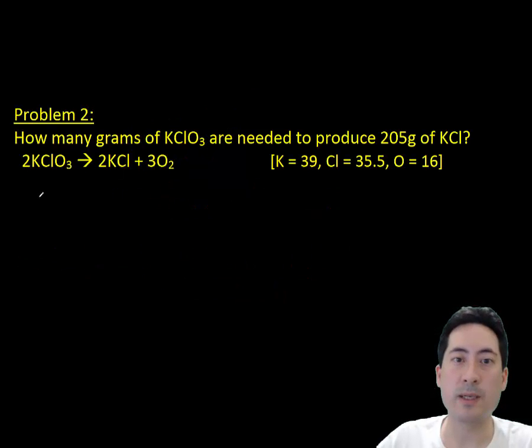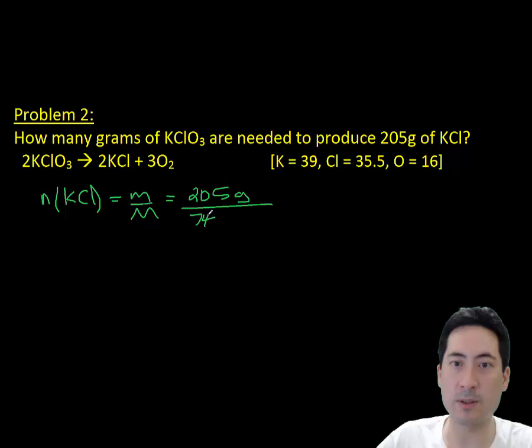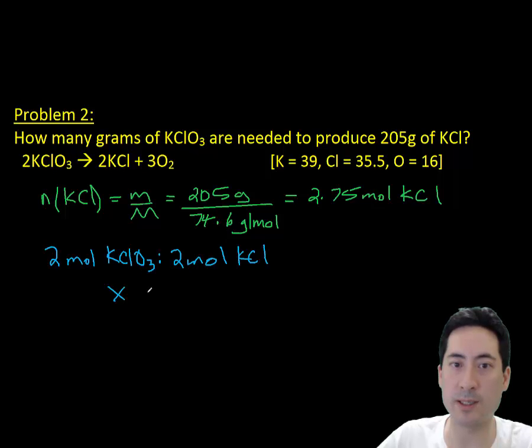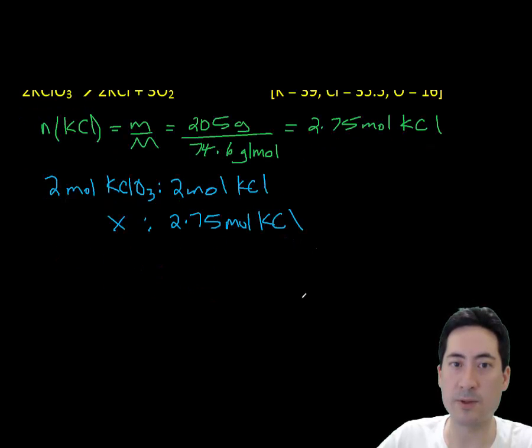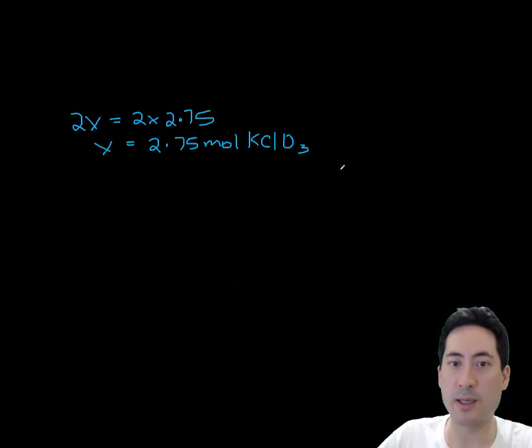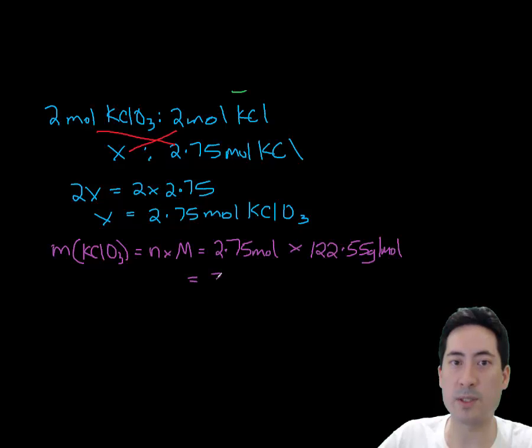Looking at the problem in a slightly different way now, how many grams of potassium chlorate are needed if you want 205 grams of potassium chloride. So a very similar way, you work out, well, how many moles of potassium chloride is that? So I can work out how many moles of potassium chlorate I need, which is 2.75 moles, and then work out how much mass that is. So times that out using the formula and that gives me 337 grams.